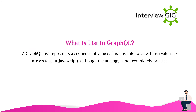What is a list in GraphQL? A GraphQL list represents a sequence of values. It is possible to view these values as arrays — for example in JavaScript — although the analogy is not completely precise.